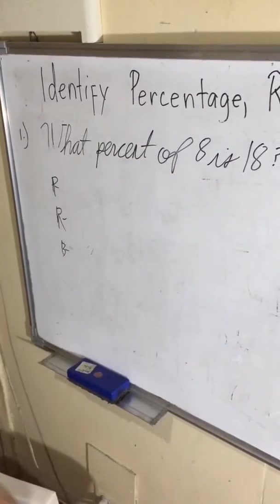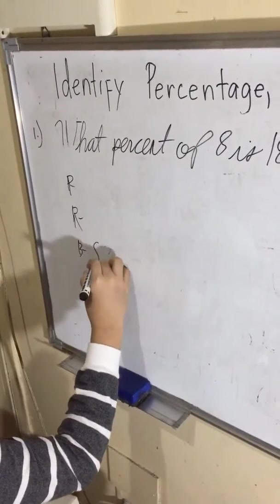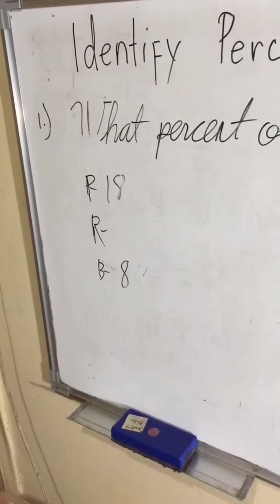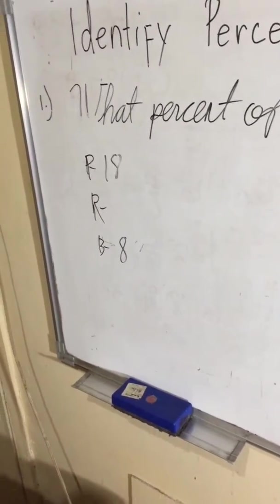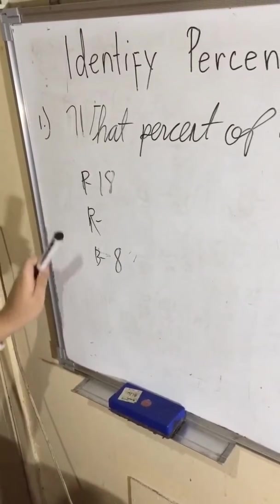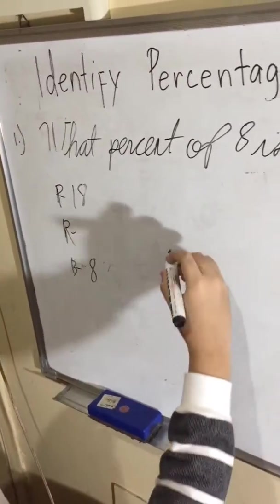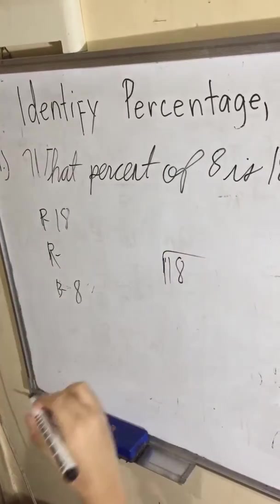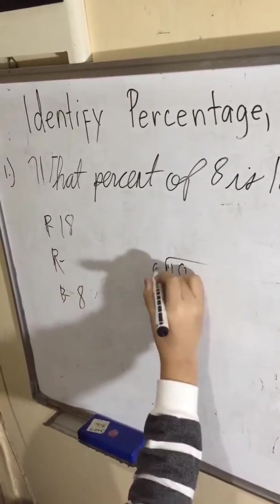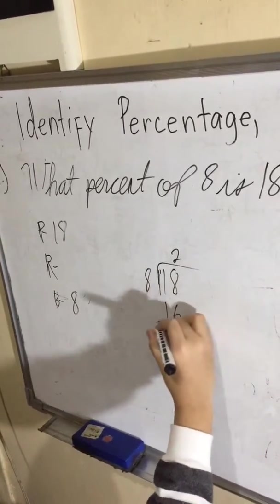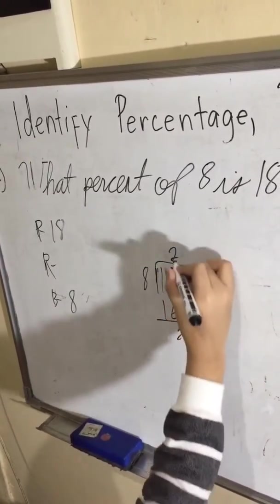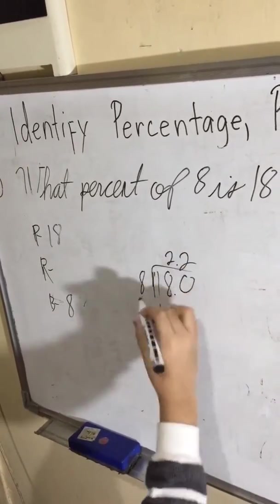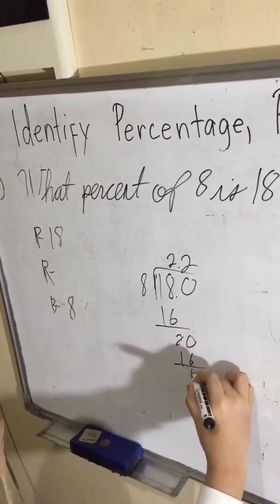So 8 is the base and 18 is the percentage. We need to divide the percentage by the base. So 18 divided by 8, that would be 2. 16, 2.2 again, 2 times 8 would be 16, would be 4, another 0 would be 5.